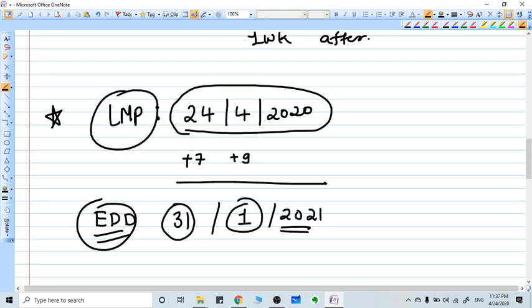So for example, if any patient's LMP is today's date, that is 24th of April of 2020, how do we calculate expected date of delivery from this LMP? We use a formula, Naegele's formula. Here what we do, we add nine months and seven days to the date of LMP.